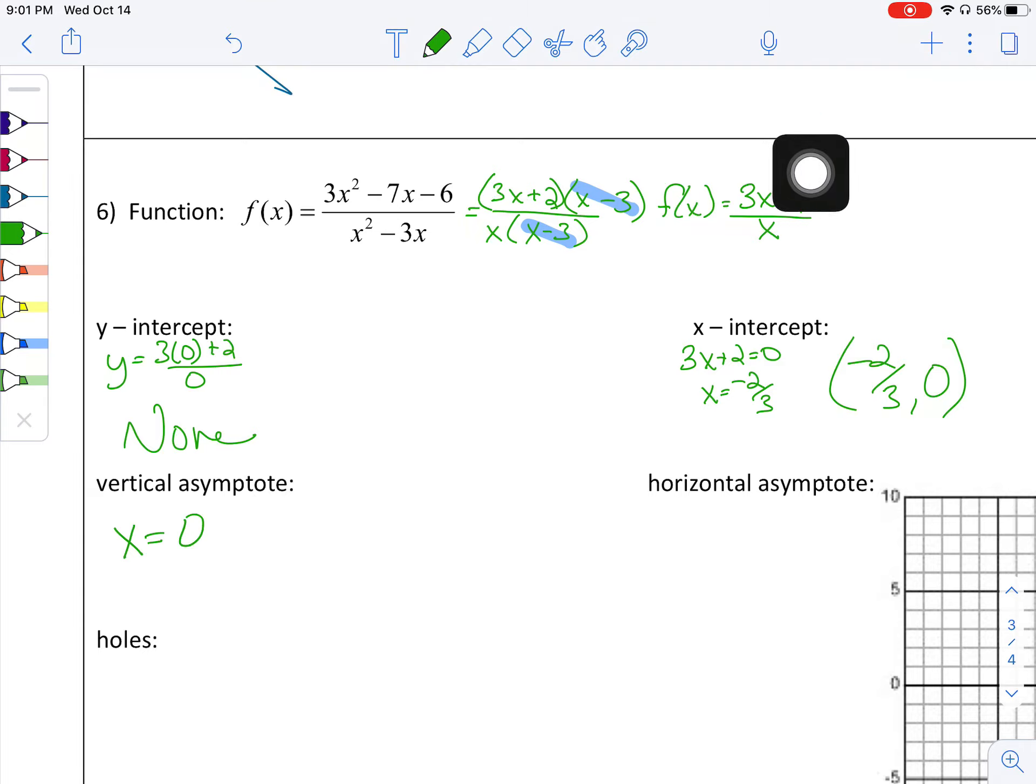Horizontal asymptotes, our degrees match, right? x and x, they're both first degree. Or if you go back to the original, they're both squared, second degree. So if we divide the coefficient, so three divided by one in the denominator, it is y equals three.